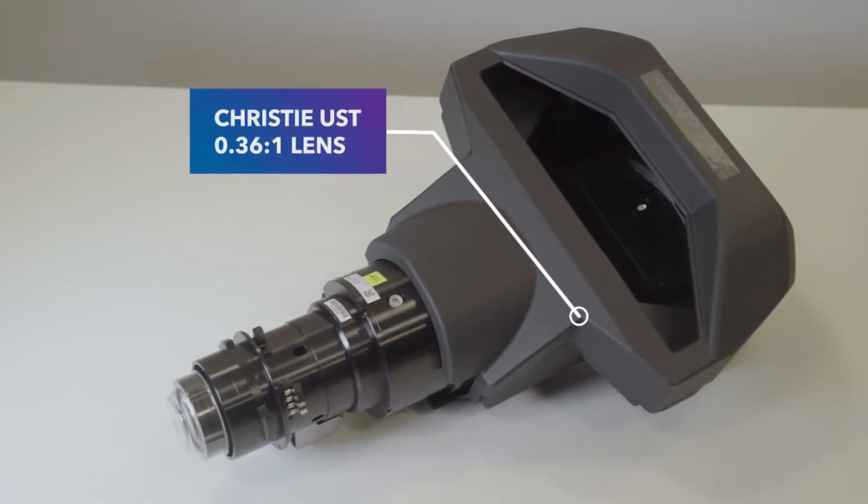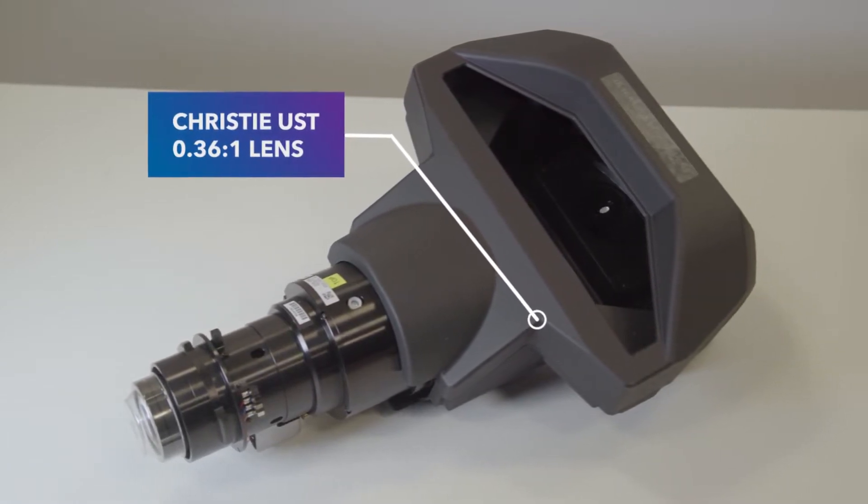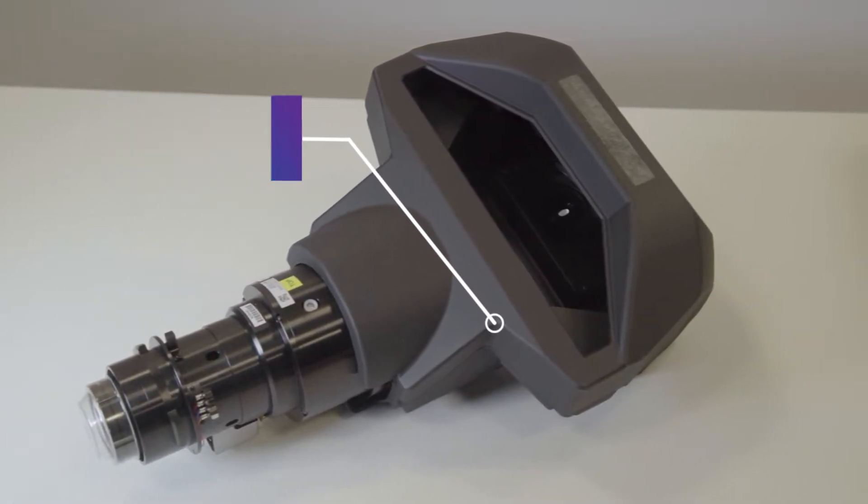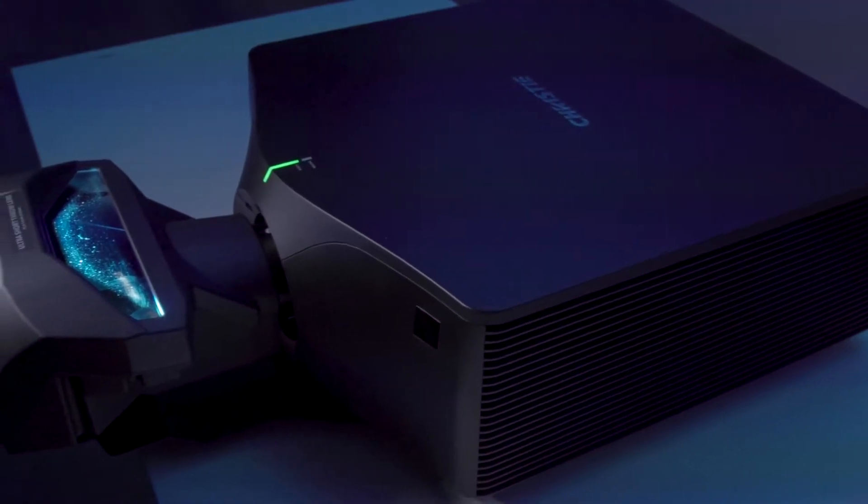The Christie Ultra Short Throw Lens allows you to position your projector as close as possible to your screen or display with a 0.36 to 1 throw ratio.